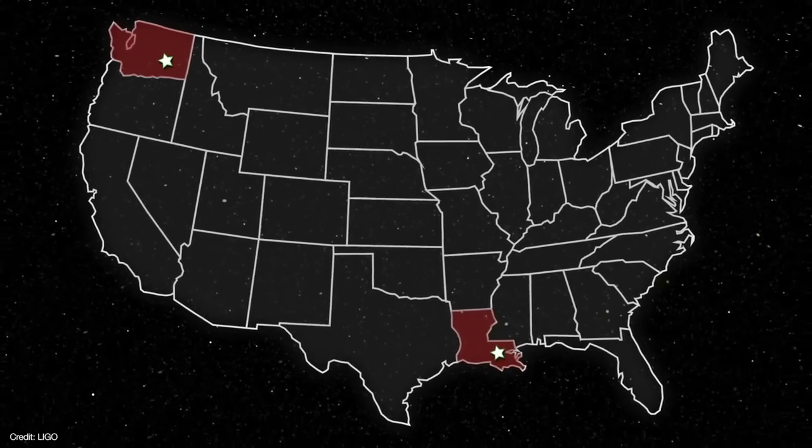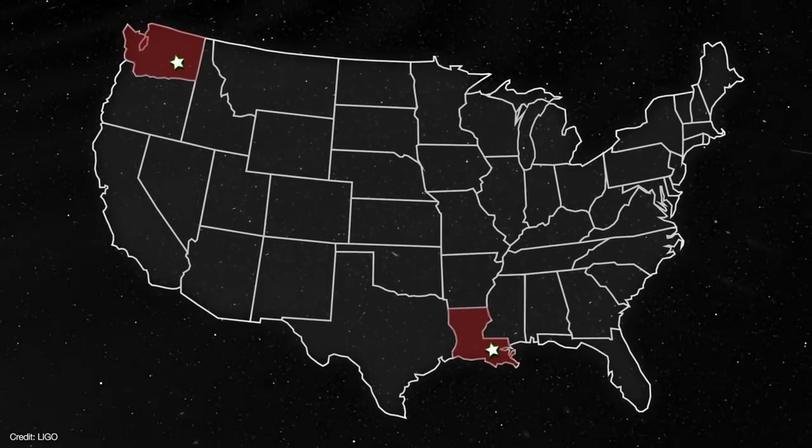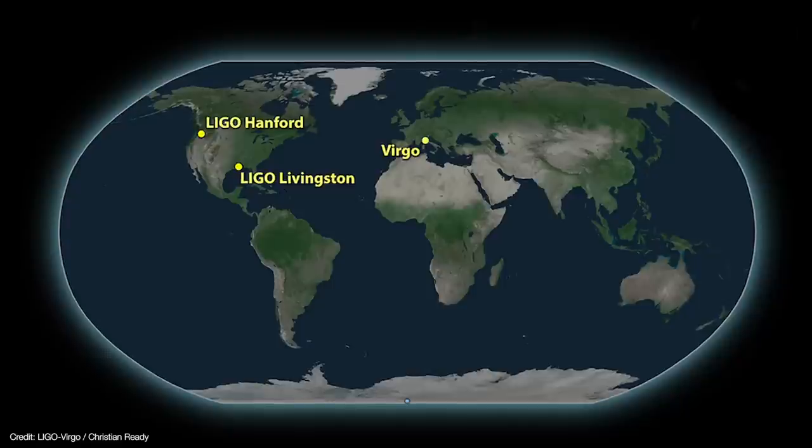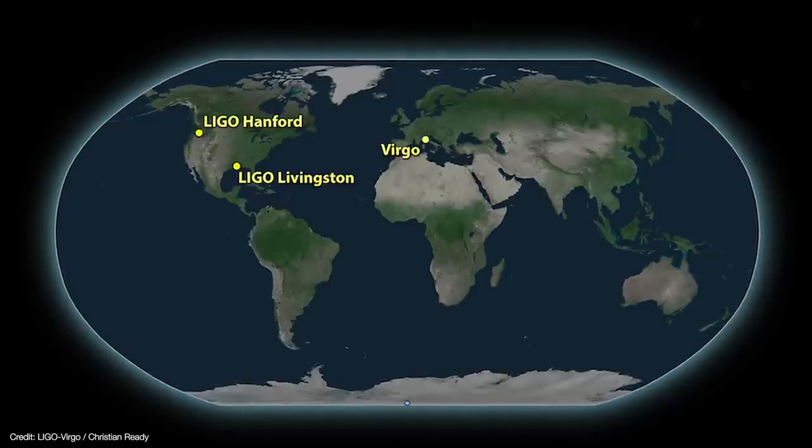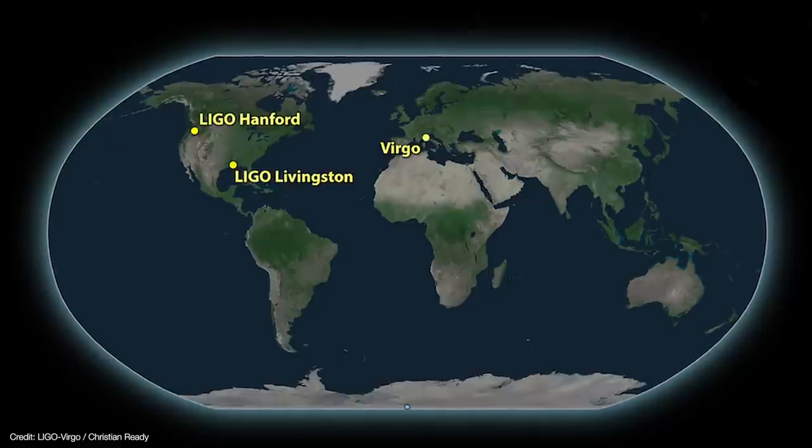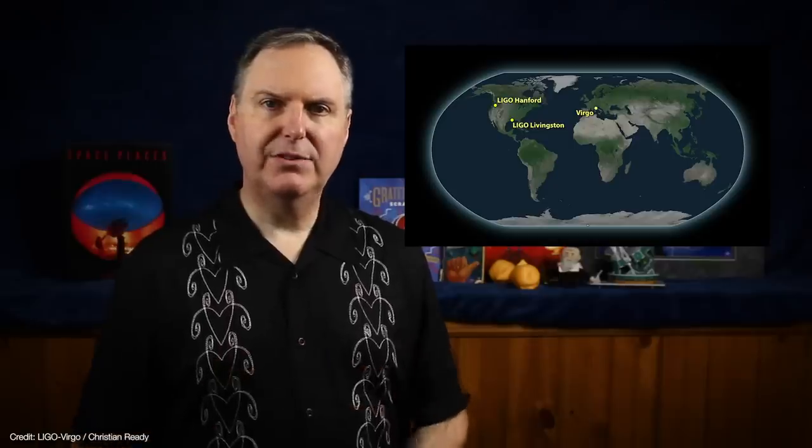That's why LIGO uses two interferometers, one in Livingston, Louisiana, the other in Hanford, Washington. The two interferometers serve as a check on each other. In 2017, Europe's Virgo interferometer near Pisa, Italy joined the LIGO-Virgo collaboration. So with at least three interferometers working together, scientists can compare their results and work out what caused the waves and even figure out the direction the waves came from.